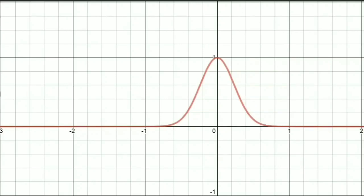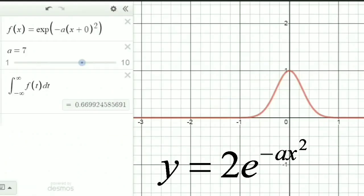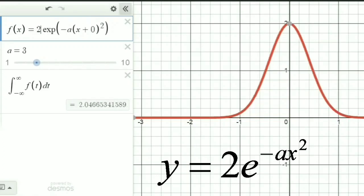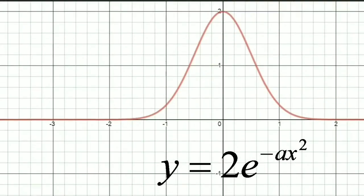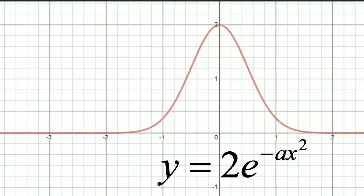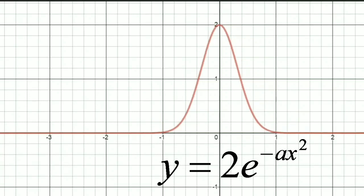Now, let us multiply the Gaussian equation y equal to e raised to minus ax square with a constant. Here I am multiplying with the number 2. If we look at the curve, we can see that the maximum point on the curve, which was initially at 1, has now shifted to the point 2. So whenever you are multiplying a Gaussian with a constant, the amplitude of the Gaussian curve becomes the constant times the initial amplitude.